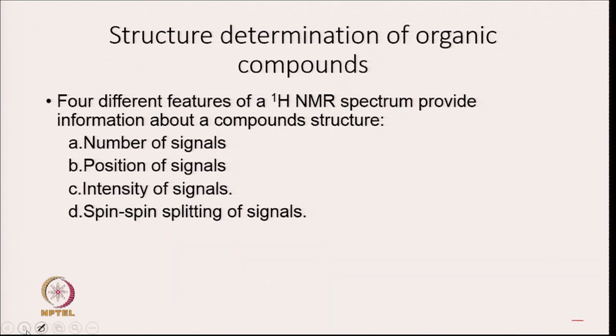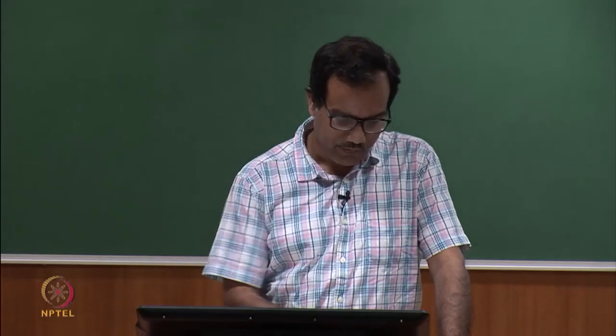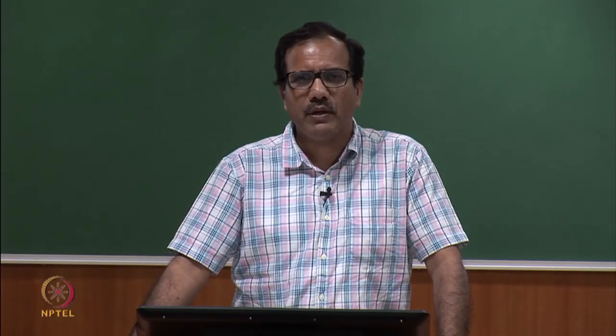Four different features of proton NMR spectrum provide information about a compound's structure: number of signals, position of signals, intensity of signals, and splitting of signals. These four features give important information through which we can derive the structure of organic compounds. I will go one by one through each feature and discuss their importance.